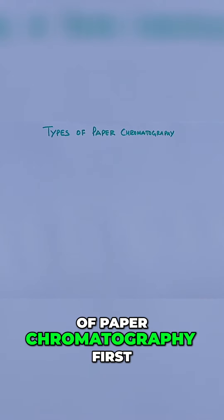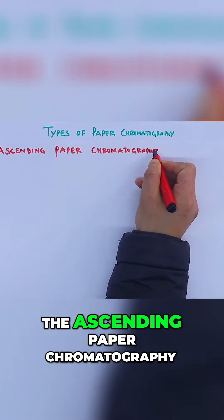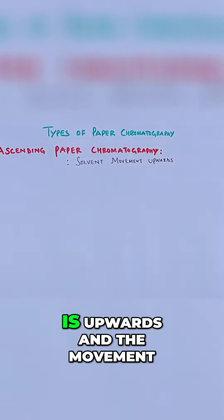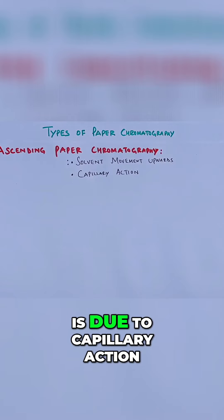Now let's see the types of paper chromatography. First we have the ascending paper chromatography where we see the solvent movement is upwards and the movement is due to capillary action.